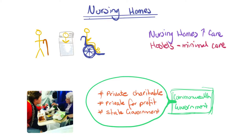As well as hospitals, nursing homes are institutional health providers. Nursing homes provide care and long-term nursing attention for those unable to look after themselves — mainly Australia's ageing population, as well as those who are chronically ill, have dementia, or have a disability. Some nursing homes cater specifically for young people with disabilities. There are three types: private charitable, private for-profit, and state government. However, the federal government assumes responsibility for most of the financial cost of running nursing homes in Australia.